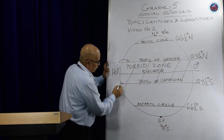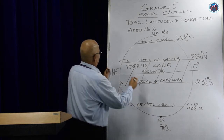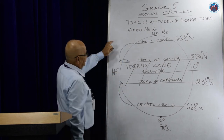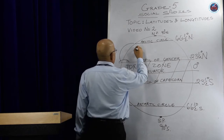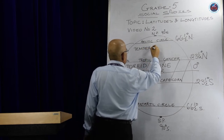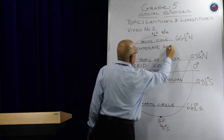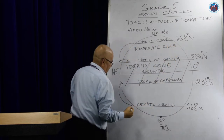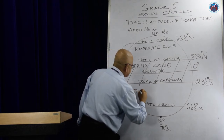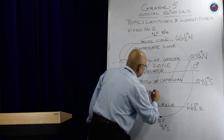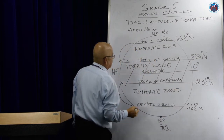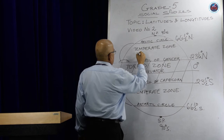From the Tropic of Cancer to the Arctic Circle, and from the Tropic of Cancer to the Antarctic Circle, these areas are known as temperate zones. These areas are not too hot, not too cold.